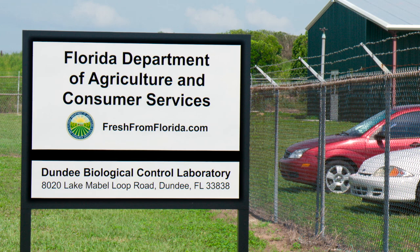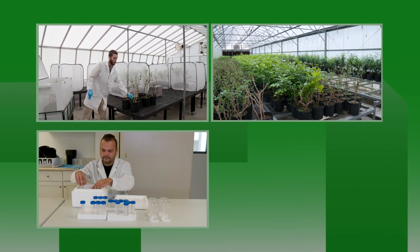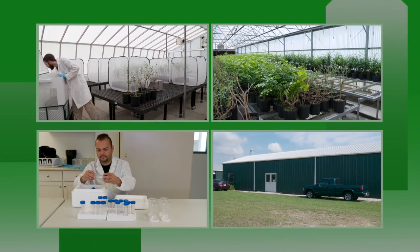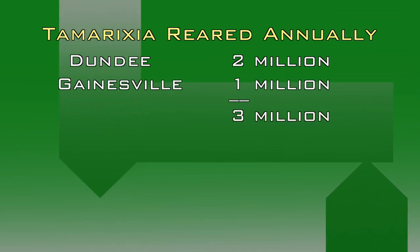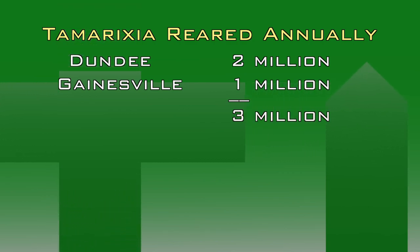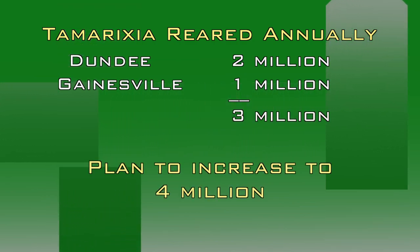The 30,000 square foot Dundee facility houses plant and insect rearing chambers, greenhouses, laboratories, offices, and maintenance facilities. At Dundee, over 2 million Tamarixia are reared annually. The Gainesville rearing laboratory produces 1 million yearly. Efforts are underway to increase this number to 4 million annually.